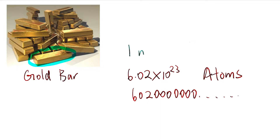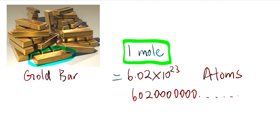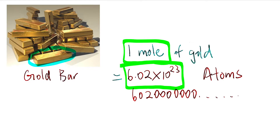One mole has a value of 6.02 times 10 to the power 23 — it has this very beautiful relationship. In one mole of gold there would be 6.02 times 10 to the power 23 gold atoms. So it's just a simpler way for us to represent this value.